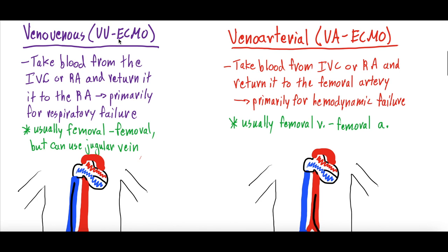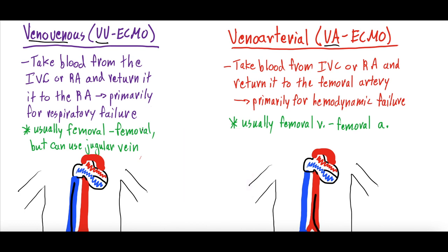There are two main types of ECMO: venous-venous ECMO, also known as VV ECMO, and veno-arterial ECMO, also known as VA ECMO. In venous-venous ECMO, blood is taken out of the IVC — the inferior vena cava — or the right atrium, and returned back to the right atrial circulation. This is primarily for respiratory failure.